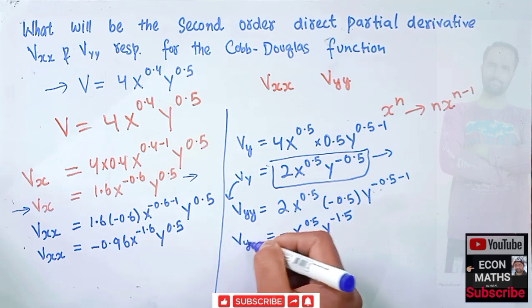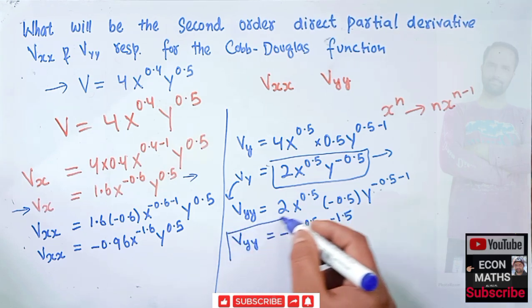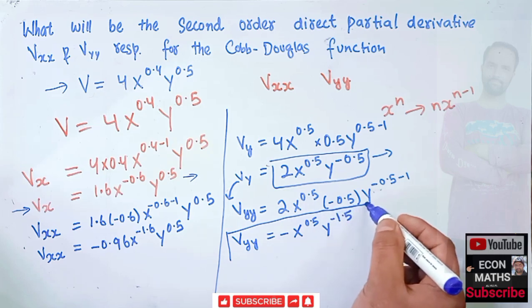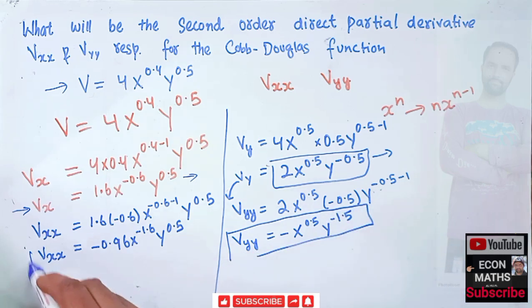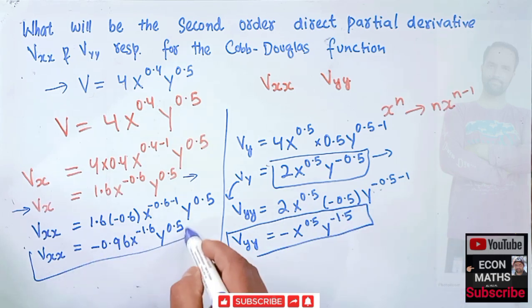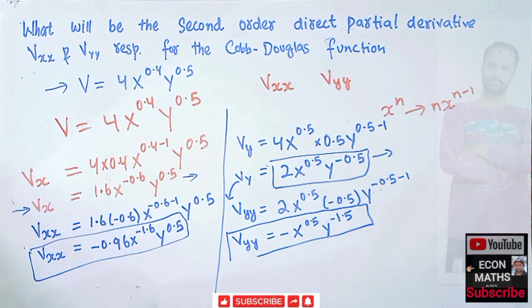So these are our second order direct partial derivatives for the Cobb-Douglas function. I hope I've made myself clear. Thank you.